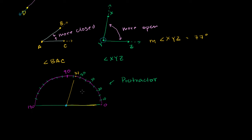I want to be clear that degrees aren't the only way to measure angles — really anything that measures the openness works. When you go into trigonometry, you'll learn that you can measure angles not only in degrees, but also using something called radians. But I'll leave that to another day.